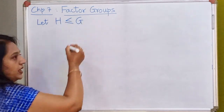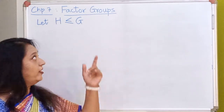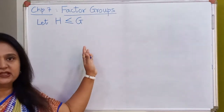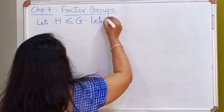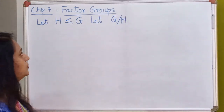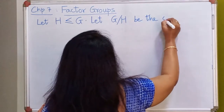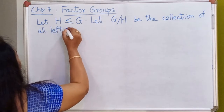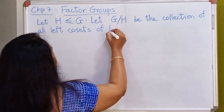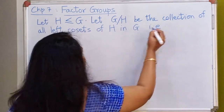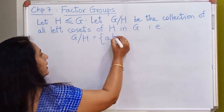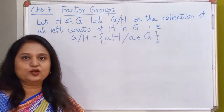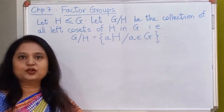Let H be a subgroup of a group G. For every element of G we can obtain a left coset of H in G. So we are going to look at the collection of all left cosets of H in G, and we are going to denote that collection by G over H — G by H. So let G/H be the collection of all left cosets of H in G.